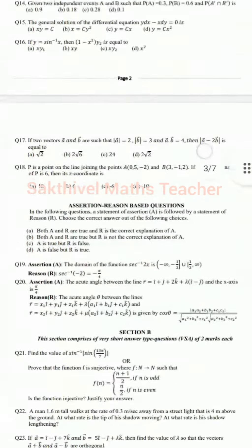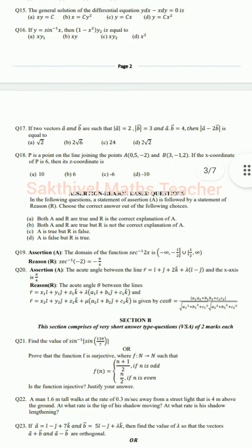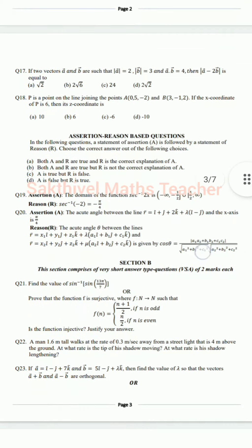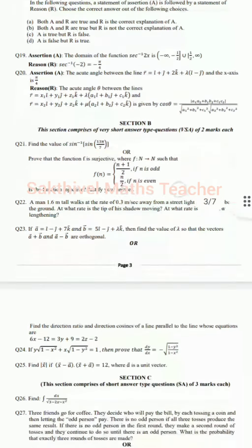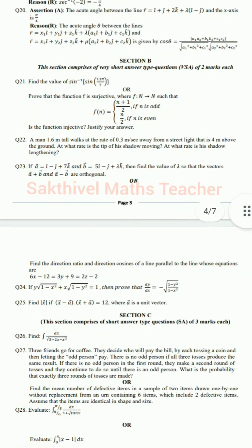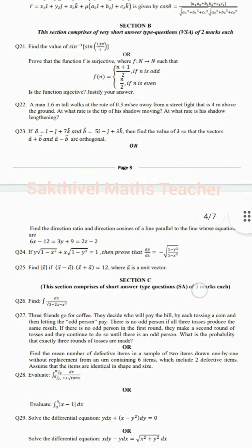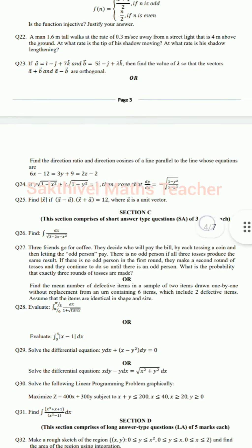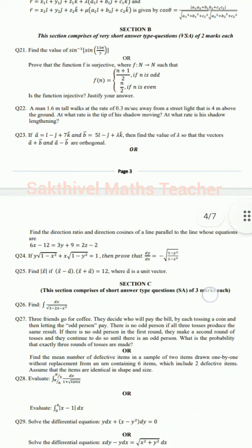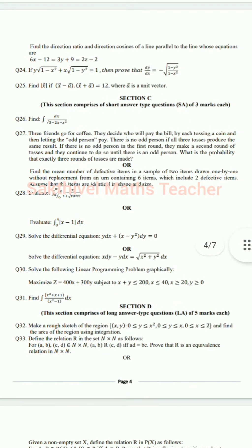Questions 19 and 20 are assessment and reasoning questions. That is Section A. In Section B, they released two-mark questions - totally five questions. For those, they given internal choice for two questions, so we have to write only one. One internal choice is provided for one question in the two-mark section.